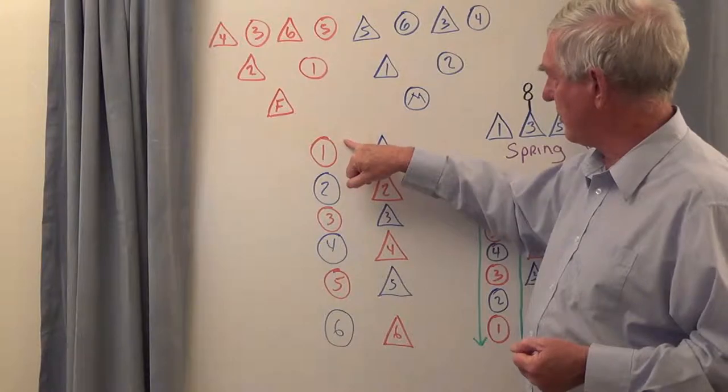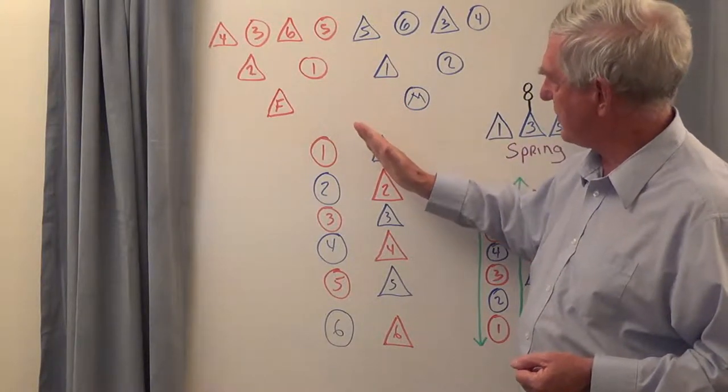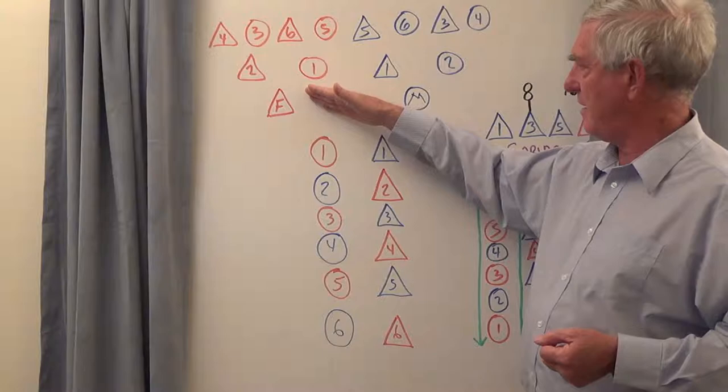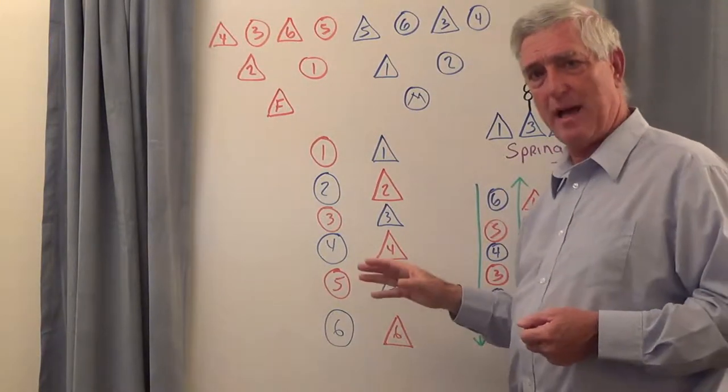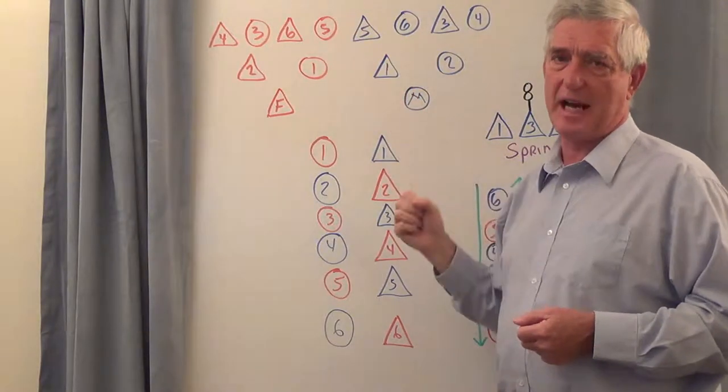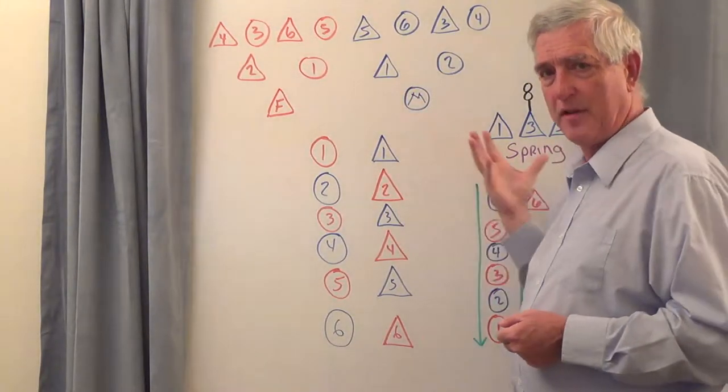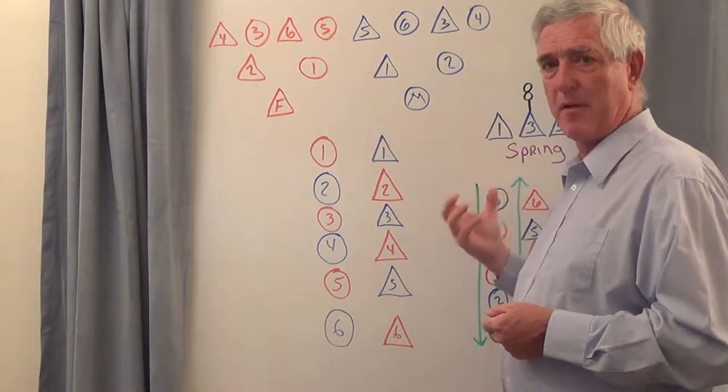So number one girl, we see oftentimes is related to the father's side of the family and the father's mother. Virtually every one of these symbols in red relates to the father's side of the family. Every one of the symbols in blue relates to the mother's side of the family.